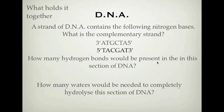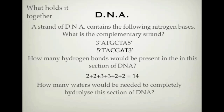How many hydrogen bonds would be present in this section of DNA? How many hydrogen bonds will be holding this together? Every A-T pair has 2 hydrogen bonds and every C-G pair has 3. So looking at the pairs: A-T gives 2, T-A gives 2, G-C gives 3, C-G gives 3, T-A gives 2, A-T gives 2 — that makes a total of 14 hydrogen bonds linking this section of DNA together.